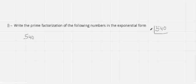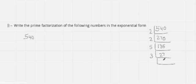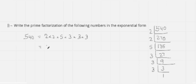Then we come to the last question: write the prime factorization of the following numbers in exponential form. Let us take 540. Doing the prime factorization of 540: dividing by 2 gives 270, again by 2 gives 135, then by 5 gives 27, then dividing by 3 three times gives 1. So we get 2 multiplied with 2 multiplied with 5 multiplied with 3 times 3 times 3. That gives us 2 power 2 multiplied with 5 multiplied with 3 power 3. This is your answer.